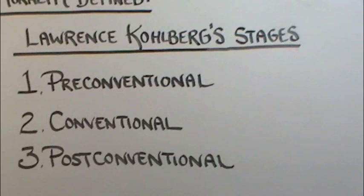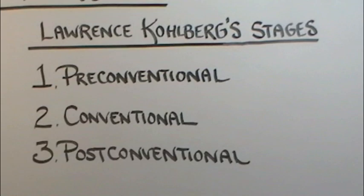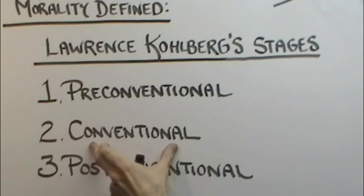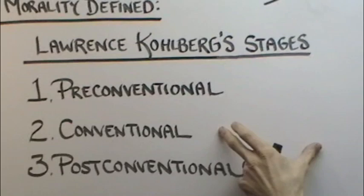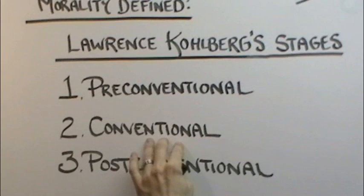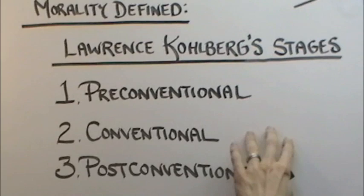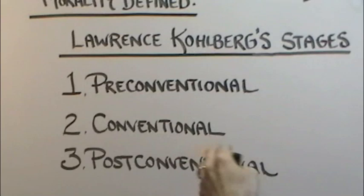The second stage is what is called the conventional stage. At this stage, a person is able to move past the idea of personal gain or loss, and they look at the moral choice not through their own eyes and whether or not they're going to go to prison. They look at it based on the values of society overall — making the moral decision based on what society deems as acceptable. Because if they do what society deems acceptable, they are going to fit in with everybody else and may even become a hero.